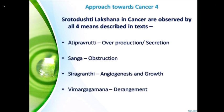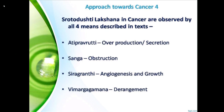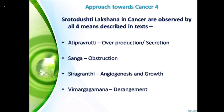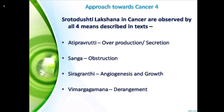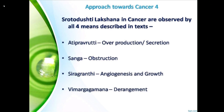The next approach is srotodushti — its lakshanas in cancers are observed by four means described in the text: atipravurthi, sangha, sannigata, and vimagata. These correspond respectively to secretion, obstruction, angiogenesis of growth, and derangement.